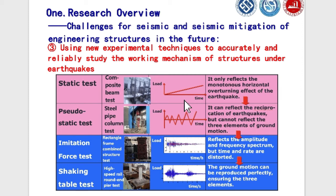For large structures such as moving trains, bridges, and huge buildings, in-situ testing is usually difficult and is typically conducted after construction. Once the engineering structure is constructed, its performance is already determined, and it is not easy to change — whether it is a building or a bridge.